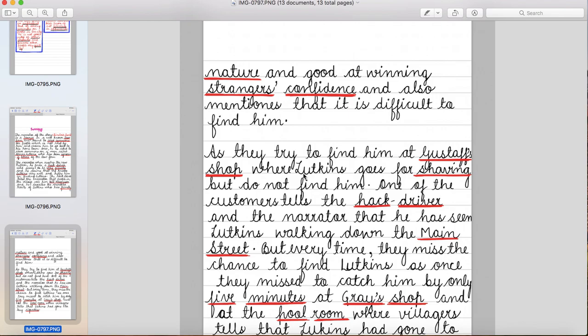So as they try to find him at Gustav's shop where Lutkins goes for shaving but do not find him. Fir woh Gustav ki shop mein jate hai but Lutkins ko nahi mil paate hai because Lutkins waha se bhi nikal jata hai. One of the customers tells the hack driver and the narrator that he has seen Lutkins walking down the main street.